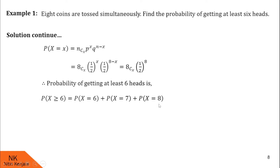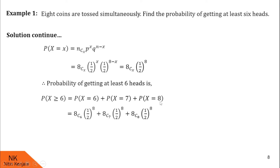Why do we stop at 8? Because there are at most 8 heads in 8 coins. So let us calculate: P(X=6) = 8C6 * (1/2)^8; P(X=7) = 8C7 * (1/2)^8; and P(X=8) = 8C8 * (1/2)^8. When we calculate this using a calculator, we get P(X ≥ 6) = 37/256. So this is the probability of getting at least 6 heads when 8 coins are tossed simultaneously.